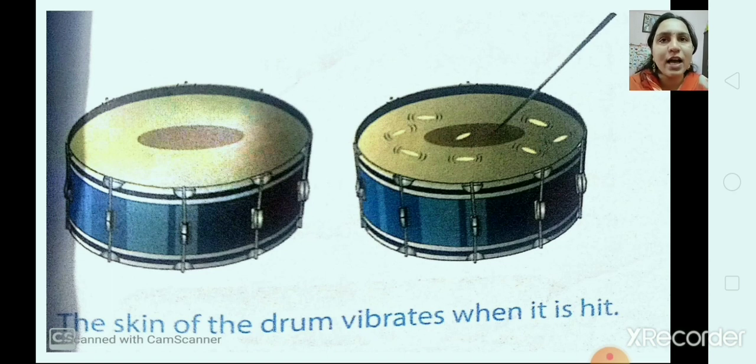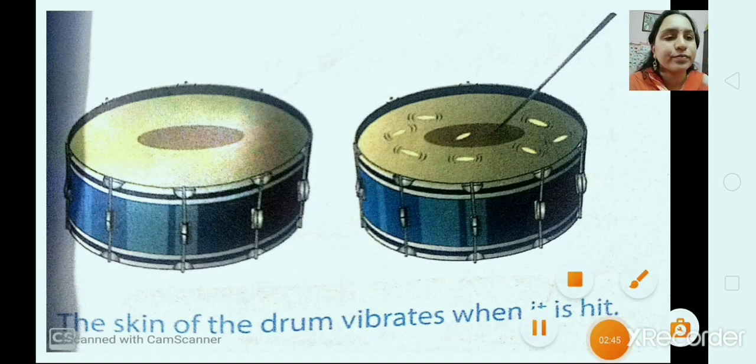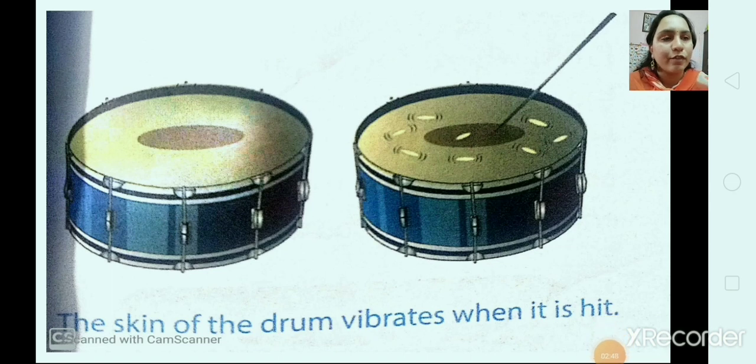So, we can say that sound is produced when anything moves back and forth very fast. We can take one more example of a metallic spoon. When a metallic spoon falls on the ground, sound is produced. The impact of the fall causes the spoon to vibrate. We can also observe the vibration of a speaker when a song is played. So, children, this type of movement is called vibration.